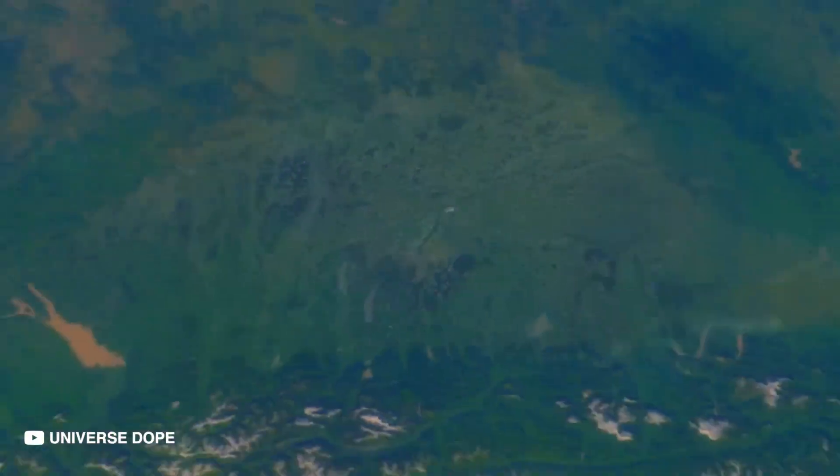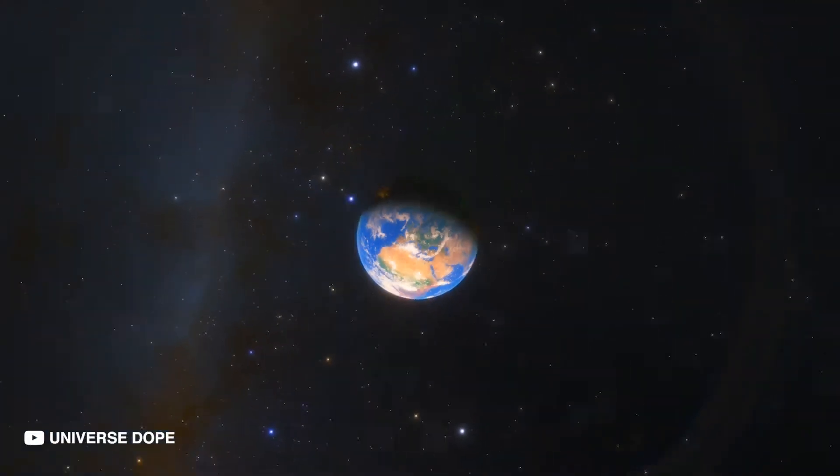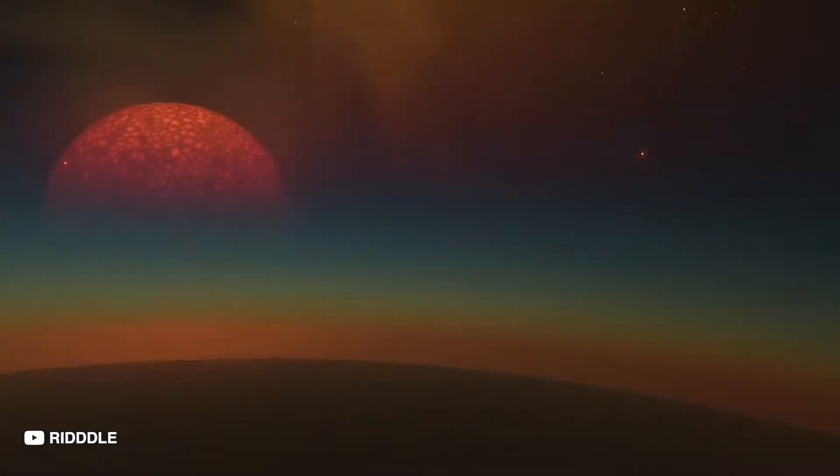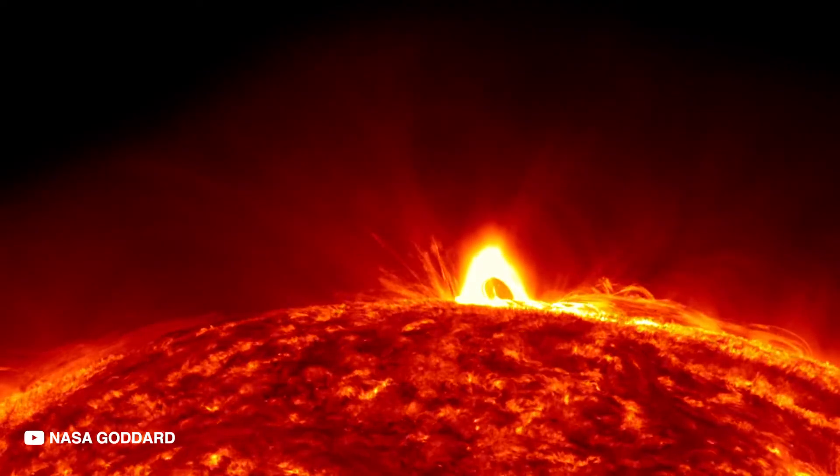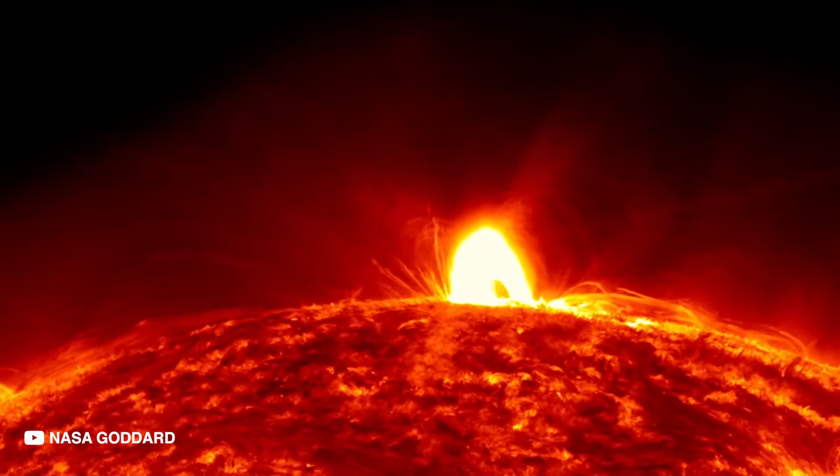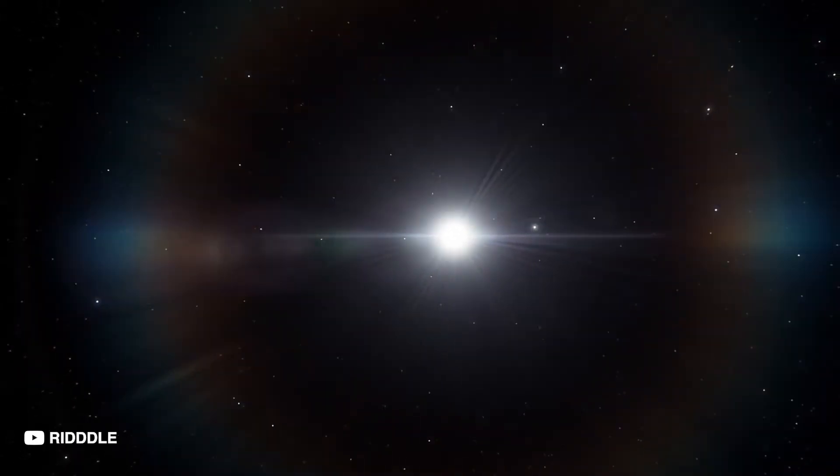Perhaps the most dangerous thing in our universe is one that lies in our own home: the Sun, the center of our solar system. Though it provides us with heat, light and essentially life, even the brightest stars have a dark side.